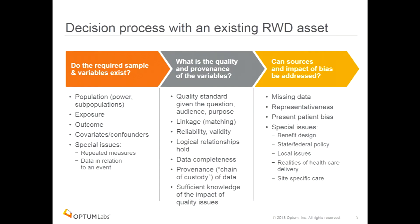It would take all day to outline the process we go through when talking about the quality of data elements and mapping out the decision process. But when I think about my cheat sheet when someone comes to me with a question, this is essentially the process I go through. First: do the required data elements and the sample exist within the asset? Do I have population sizes, power, enough for subpopulation analysis? Do I have the exposure, the outcome, the covariates, the confounders that I need? And can I deal with special issues — do I need repeated measures, do I need those measures to occur around a seminal event? For example, if I'm looking at diabetics and hemoglobin A1C, do I need a hemoglobin A1C that falls in the temporal range of a change in therapy?